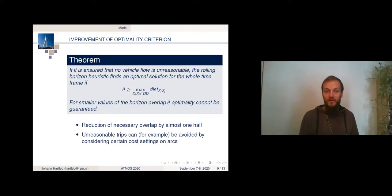And it's not only a theoretical construct. In the paper, we will provide you with what we call an artificial cost setting. We modify the objective function a little bit, which still allows us to minimize the number of vehicles, but at the same time forbid unreasonable trips. So with this cost setting, we basically provide the framework to use actually theorem 2 and find optimal solutions with the rolling horizon heuristic with this smaller overlap.